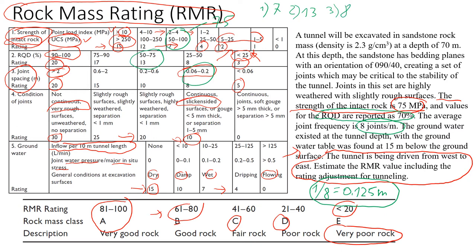Next is conditions of joints. The problem states the joints are highly weathered with a slightly rough surface. Looking that up in the table — slightly rough surface and highly weathered — the rating will be 20. Sometimes the description doesn't fit neatly into one box, so you may need to take an average, like 15, and exercise your engineering judgment. In this case it's pretty straightforward, so the number is 20.